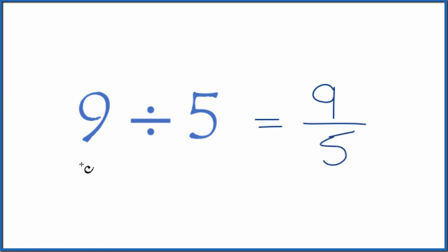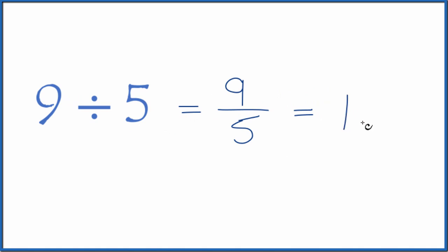The other way is you can divide 9 by 5 on a calculator. When you do that, 9 divided by 5 gives you 1.8. So 9 divided by 5 is the fraction 9 fifths, or the number 1.8.